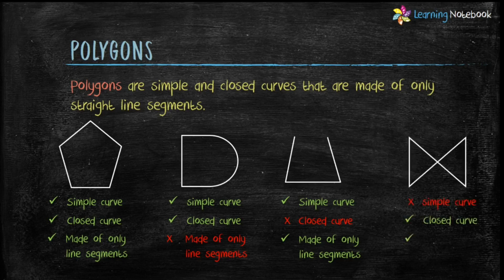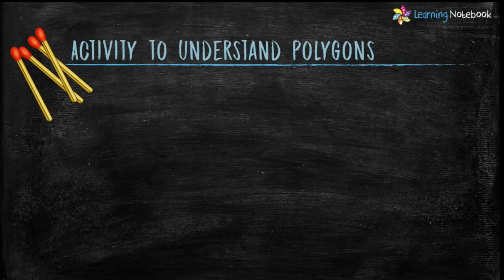Last figure is a closed curve and made of only line segments but it is not a simple curve. Therefore, it is also not a polygon. Now, students, you must have understood what are polygons.